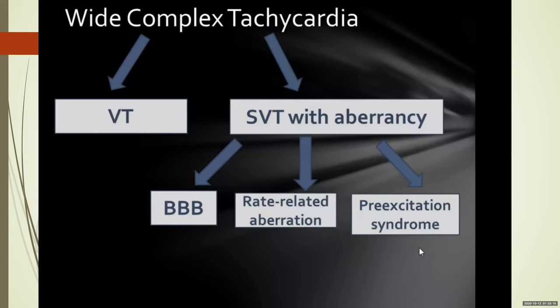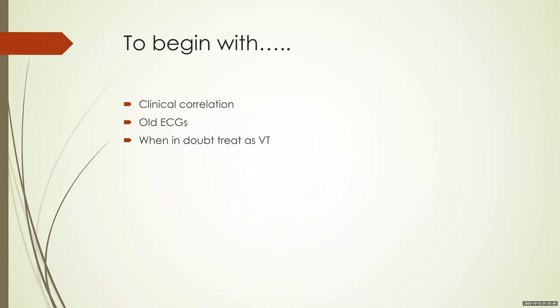A wide complex tachycardia can be a VT or an SVT with aberrancy. Aberrancy can be a pre-existing bundle branch block or a rate-induced aberration — that is, at baseline there is no bundle branch block, but when the heart rate exceeds a critical threshold, say 120 or 130, a bundle branch block develops. The third cause is SVT in the presence of baseline pre-excitation, like WPW syndrome.